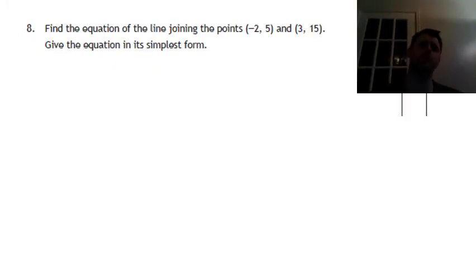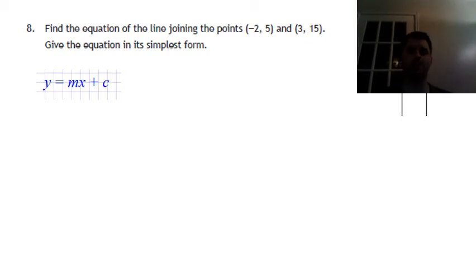So again, this time we've been given two points. It says find the equation of a line. Again, first thing we always write down with the equation of a line, y equals mx plus c. So we'll try to find the equation from two points. We have to find the gradient and then the value of c.